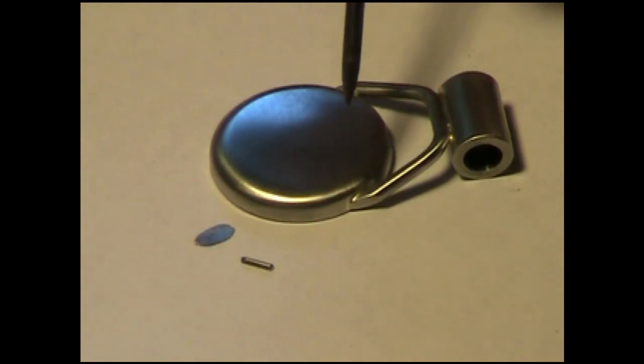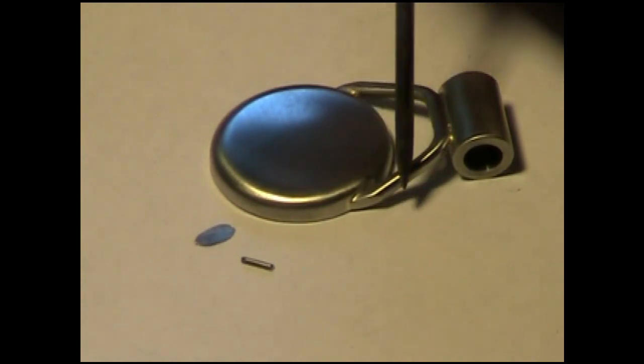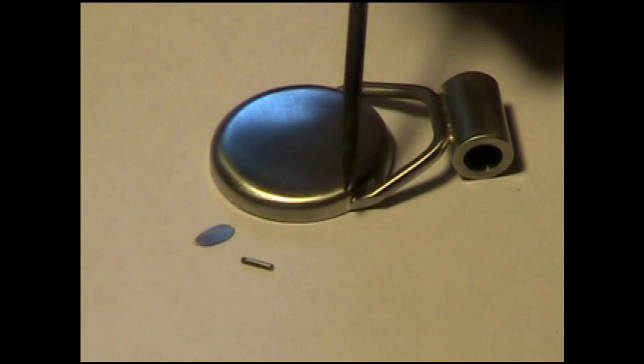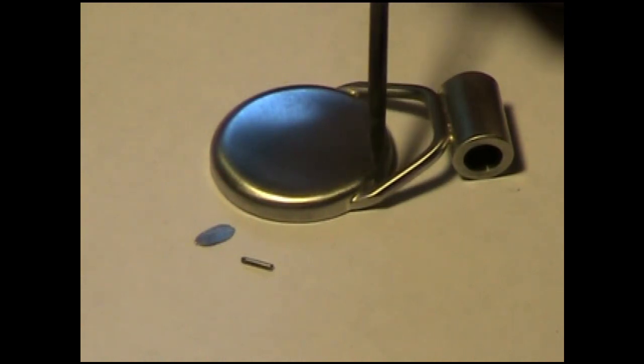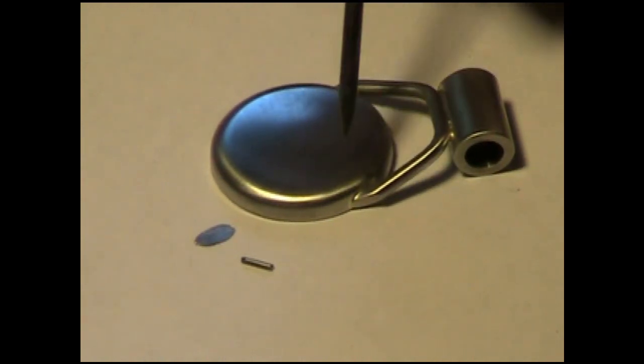Stainless steel is very difficult to silver solder. It wants to run to one part or the other instead of going in between where you want it to be, or it just runs all over the place.